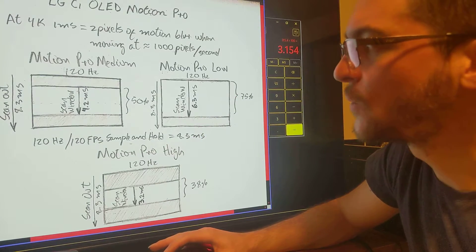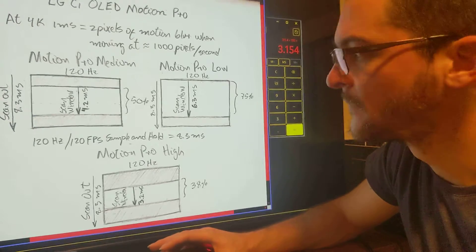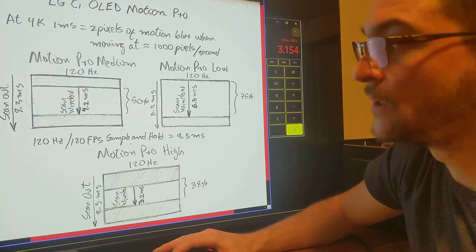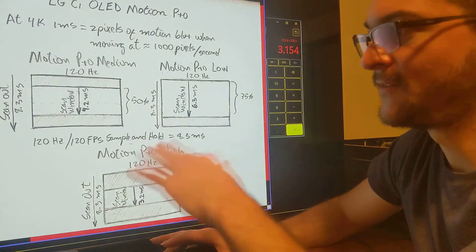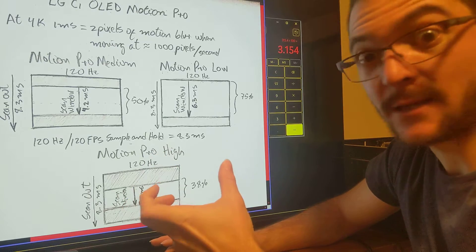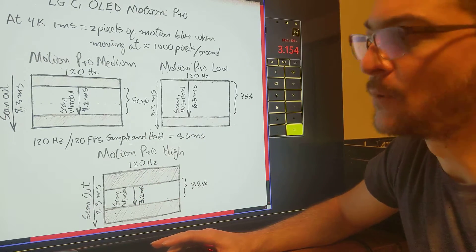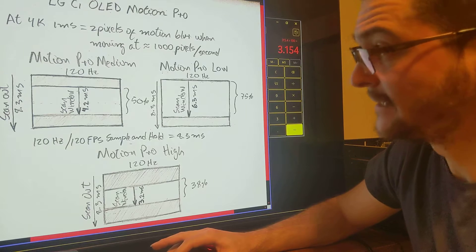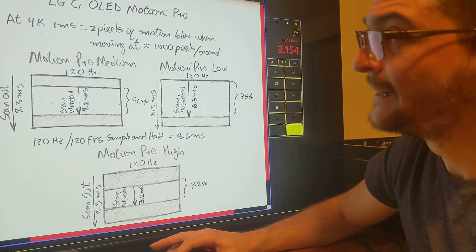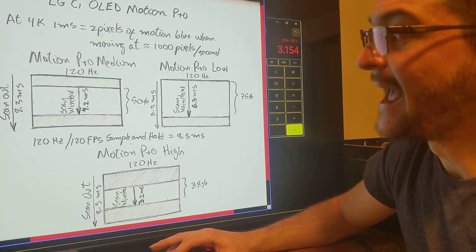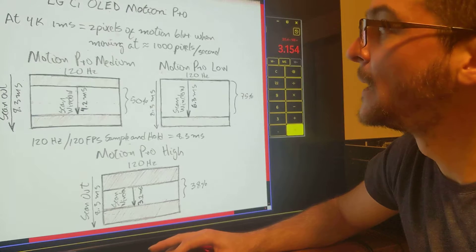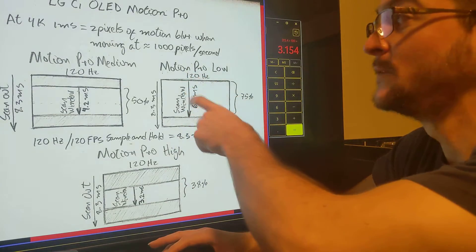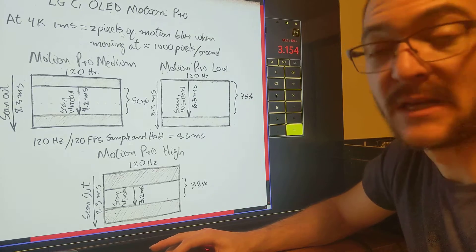For example, at 120Hz without Motion Pro, you get 120 frames in one second. Each frame stays on screen 8.3 milliseconds — you get that by dividing one second by 120, then multiplying by 1,000. Half of that is 4.2 milliseconds. So with Motion Pro Medium you get 4.2 milliseconds of persistence, which means 8.4 pixels of motion blur when the object is moving at 1,000 pixels per second. If the object moves at half the speed, you get half the motion blur.